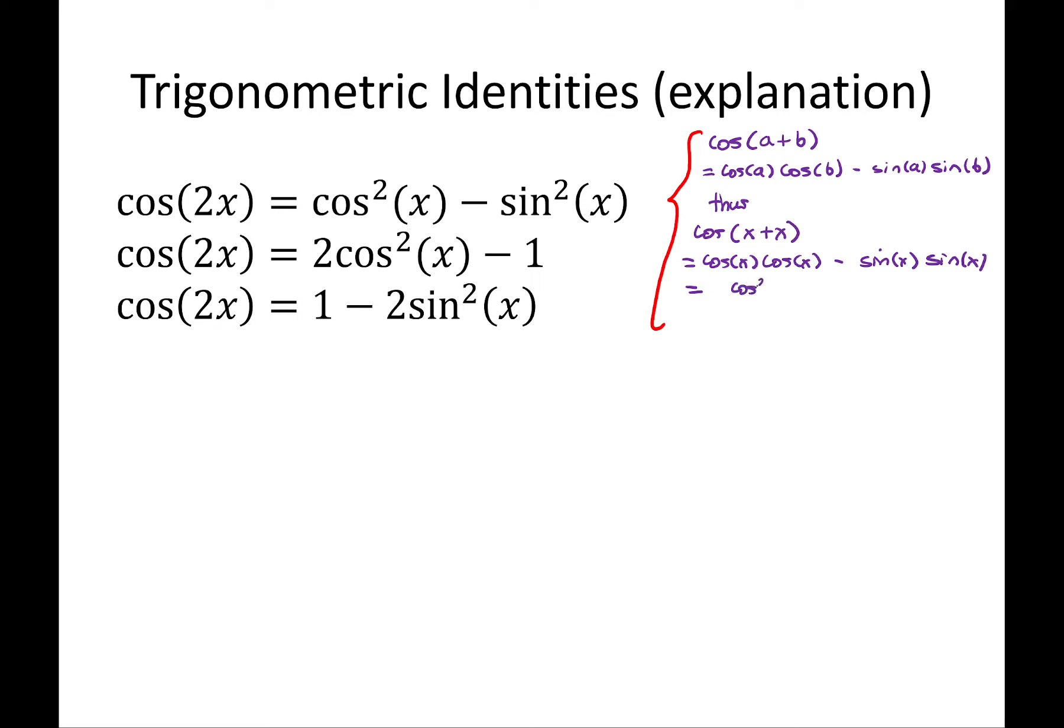Cos x times cos x has a shorthand. We call it cos squared x. Sine x times sine x has a shorthand. We call it sine squared x.